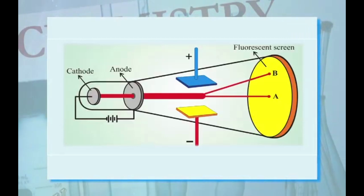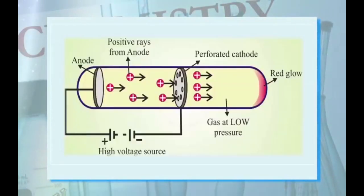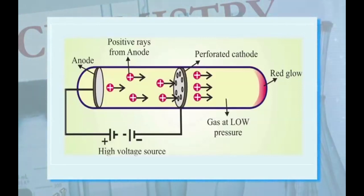Cathode rays passed through the electric field and their deflection is shown. The discovery of proton: Goldstein performed an experiment using a discharge tube similar to the cathode ray tube. Here a perforated cathode was used and was fixed in the middle of the discharge tube. On applying a high voltage, a faint red glow was observed behind the perforated cathode. The glow was due to anode rays, which are a stream of positively charged particles originating at the anode and moving towards the cathode. The glow is produced when these particles strike the glass tube behind the cathode.